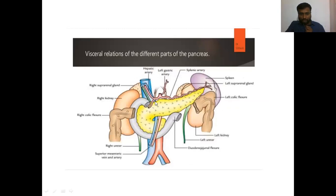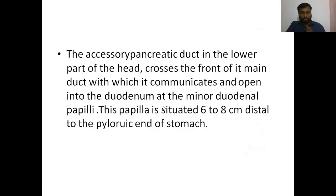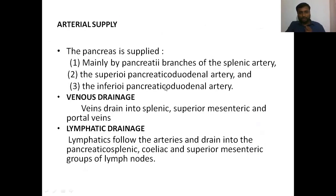Looking at this image, the superior border is related to the celiac trunk, common hepatic artery, and the splenic artery. The splenic artery runs towards the spleen and gives branches to the pancreas - those are the pancreatic branches of the splenic artery. In addition, we have two more arteries: the superior pancreaticoduodenal artery and the inferior pancreaticoduodenal artery.